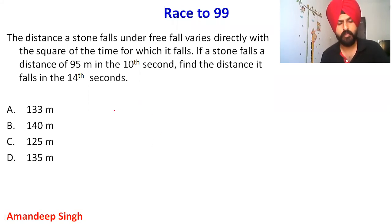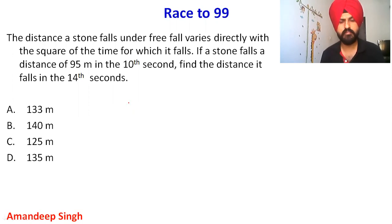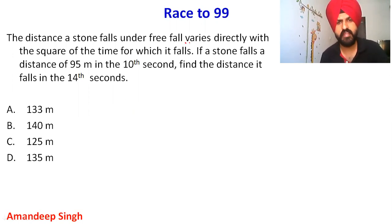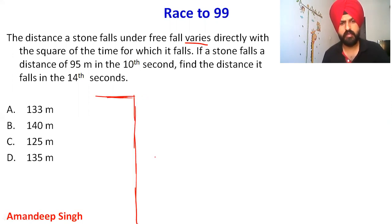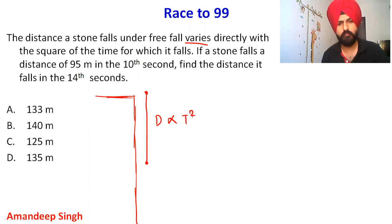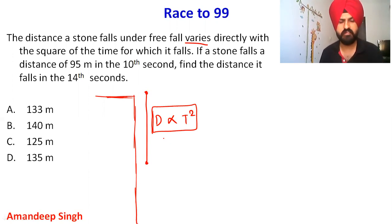The actual question is that an object — a stone — has been dropped from some building, and it says that the distance it travels varies directly with the square of the time for which it falls. This distance is varying directly with the square of the time for which it has fallen.